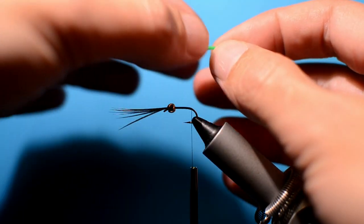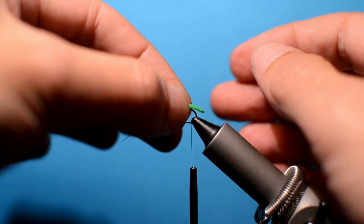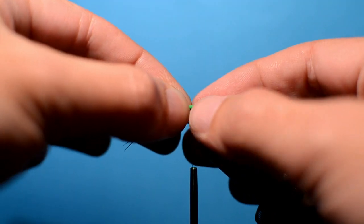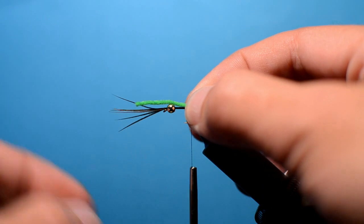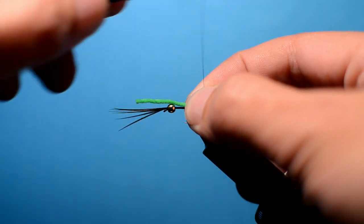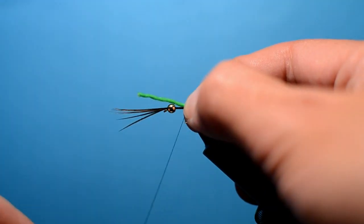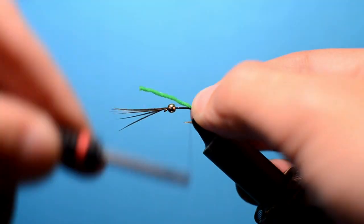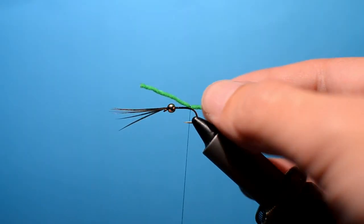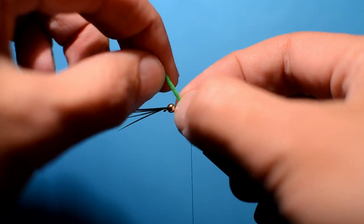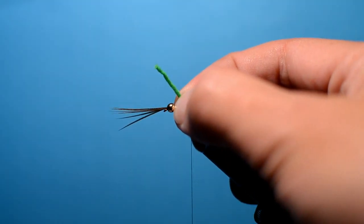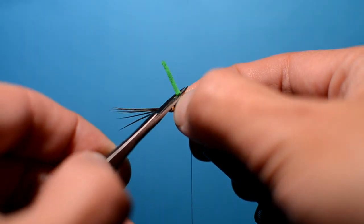Then what we want to do is position this in just past the bend of the hook. Put the thread up. Pinch and loop, get you into place. Couple of turns will hold that. Roughly mark it out and just trim it off.